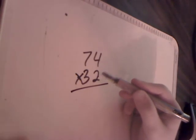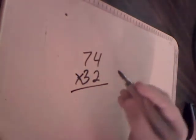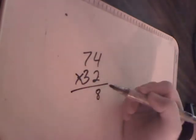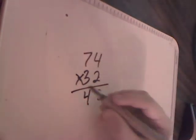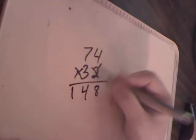First thing you want to look at is this first digit, the 2. So we're going to multiply 2 times 4. 2 times 4 is 8. Then we're going to move over and we're going to multiply 2 times 7. 2 times 7 is 14. Because we have nothing else over here, we can just put the 1 right there. Now, we're done with that 2.